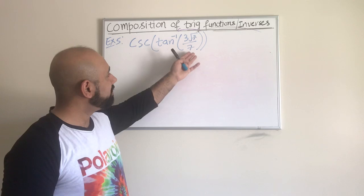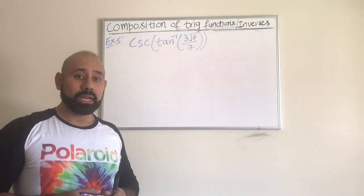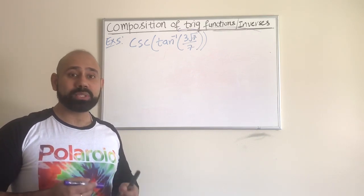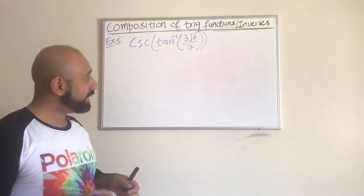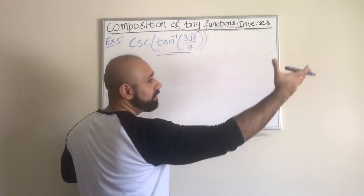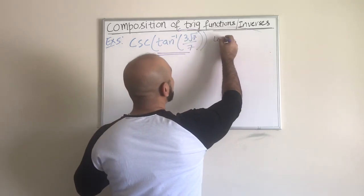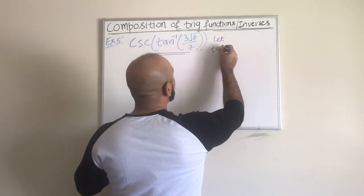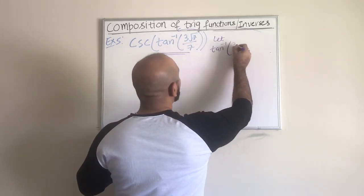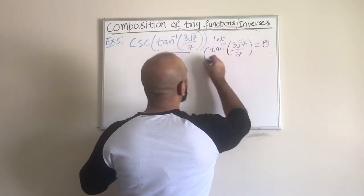...and the ratio is something that is not on the unit circle, then one has to use a slightly different technique. The technique starts by setting this guy equal to any value, where we usually like to use theta. So let tan inverse of 3√7 over 7 equal to theta.